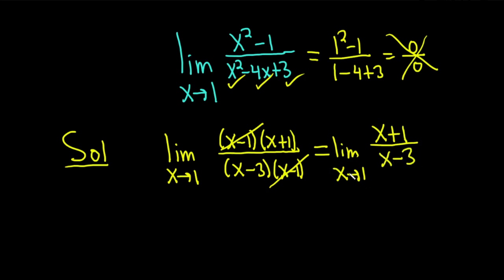And now we've reached a point where we can plug in the 1 and there's not going to be anything funky like division by 0. When you plug in the number, you drop the limit sign. So this is equal to (1 plus 1) over (1 minus 3).